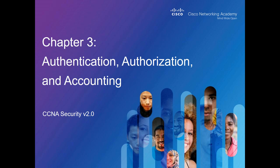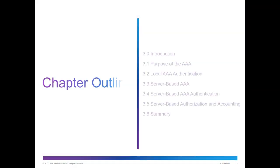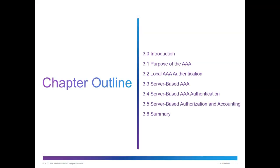This chapter is broken down into six major sections: an intro, purpose of AAA, local AAA authentication, server-based AAA, server-based AAA authentication, server-based authorization, and accounting. Sections 3.4 and 3.5 separate authentication and authorization and accounting into two different sections. The last group is going to be a summary.